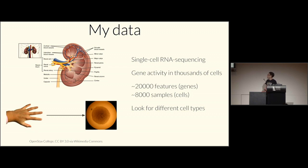As part of my PhD, I work with a kidney development lab interested in understanding how the kidney grows and changes during disease. They take a skin cell, turn it into a stem cell, and grow it under the right conditions to get a kidney organoid — a little ball of cells. They use single-cell RNA sequencing, giving a dataset of about 20,000 features (genes) and 8,000 samples (cells).